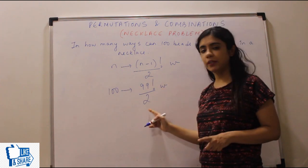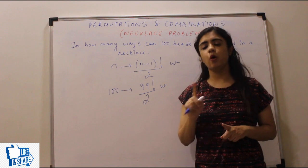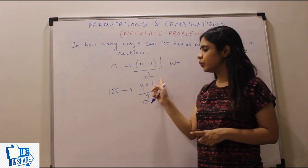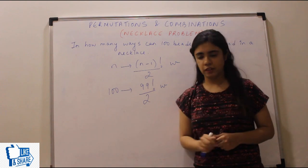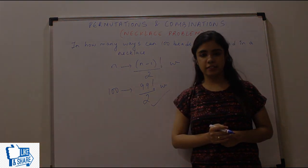So I have 100 beads. So 100 beads can be arranged in 100 minus one which is 99 factorial by two ways. Don't forget to divide it by two. If it's a garland problem or a beads problem, necklace problem, you're going to divide it by two. So this becomes your answer.